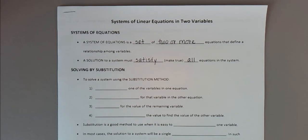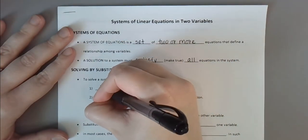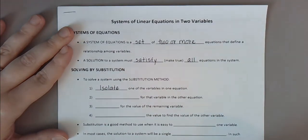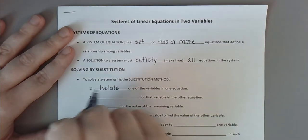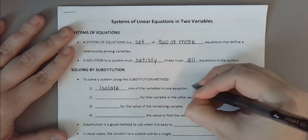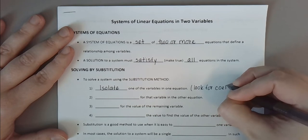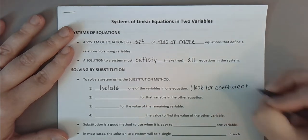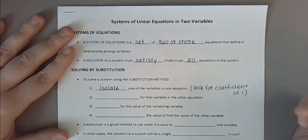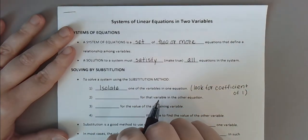We're going to talk about a couple of different algebraic ways to solve a system of equations: specifically the methods of substitution and addition, sometimes called elimination. To solve using substitution, the first thing we want to do is isolate one variable in one equation. It doesn't matter which equation or which variable we pick, but typically you want to pick a variable that has a coefficient of one.